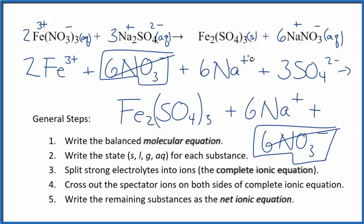Six sodium ions here, and then again in the products, spectator ions, we cross them out. And what's left, that's the net ionic equation for Fe(NO3)3 plus Na2SO4.